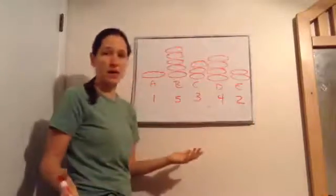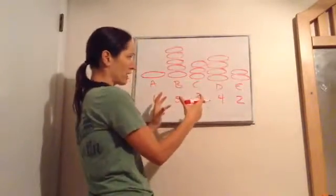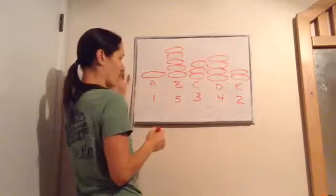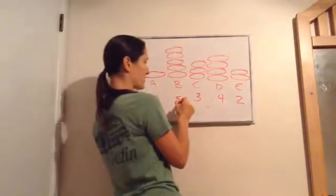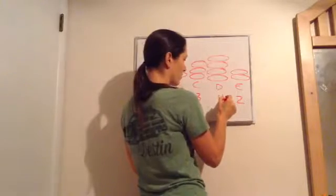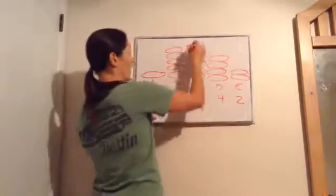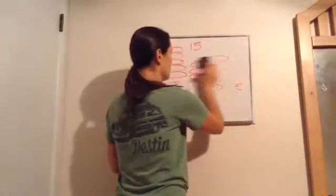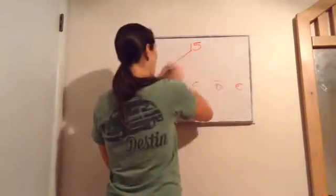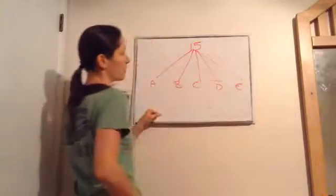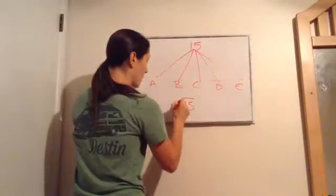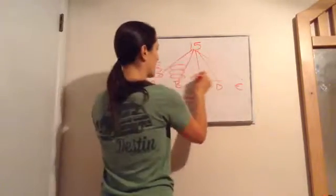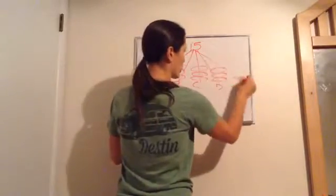Person A had one pancake, B had five, C had three, D had four, and E had two. Obviously it's not fair, so we need to bring all the pancakes together and disperse them evenly between five people. Adding them up: 1 plus 5 is 6, plus 3 is 9, plus 4 is 13, plus 2 is 15. We have 15 pancakes total. 15 divided by 5 equals 3, so everybody gets 3 pancakes — that's how you find the average.